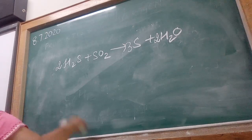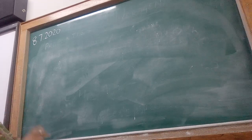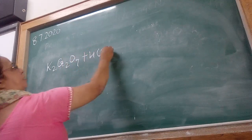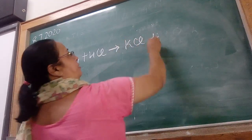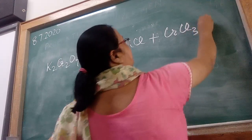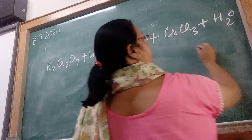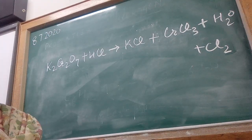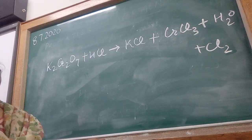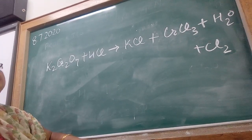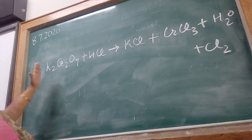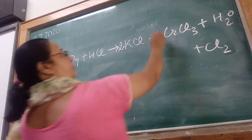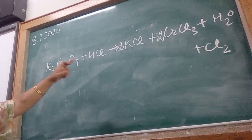Now, how do we handle long equations? For example, we have potassium dichromate plus HCl giving potassium chloride plus chromium chloride plus water plus chlorine. To balance a long equation, you have to start with the most reactive element. In this case, potassium is the most reactive element. So we place 2 potassium on each side, then 2 chromium on each side. Potassium and chromium are now balanced.